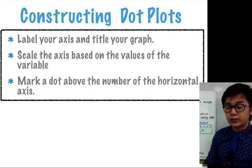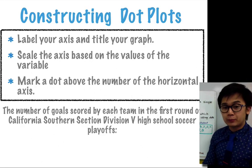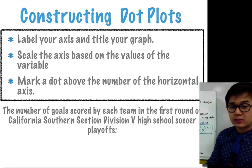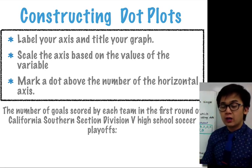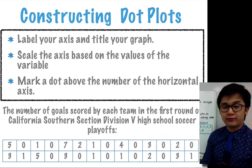Now in this example I'm going to use the number of goals scored by each team in the first round of California Southern Section Division 5 high school soccer playoffs. And here are their scores. So we have 5, 0, 1, 0 and so on.